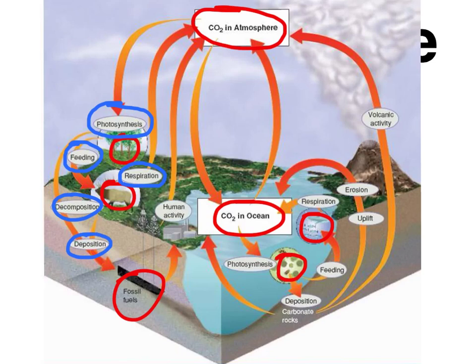Deposition is one of the geologic processes that you probably learned last year in Earth and space. As things from the surface get covered up slowly, they're deposited deep under the Earth. Under the Earth, they're exposed to intense heat and pressure. That heat and pressure is what causes the fossil fuels to form.